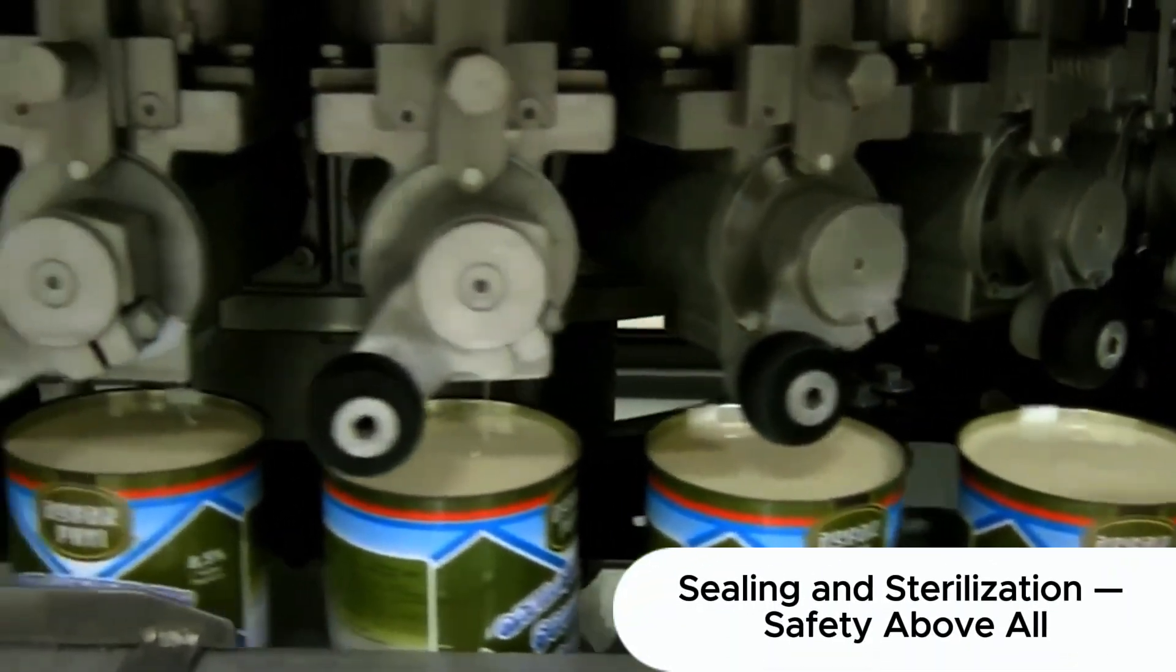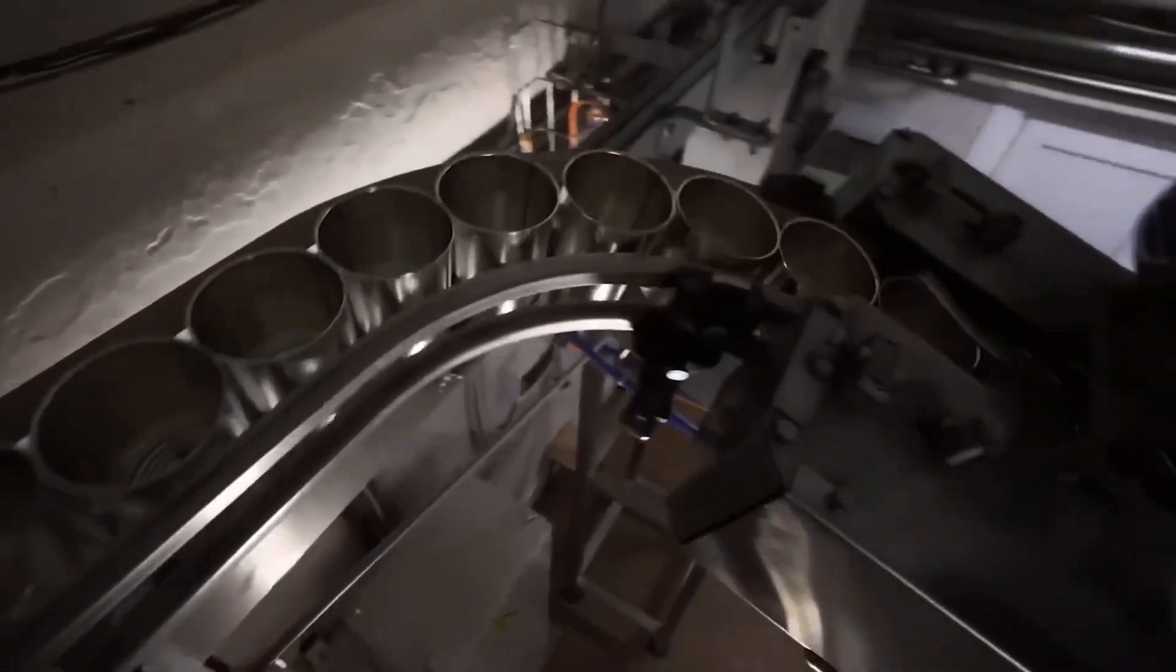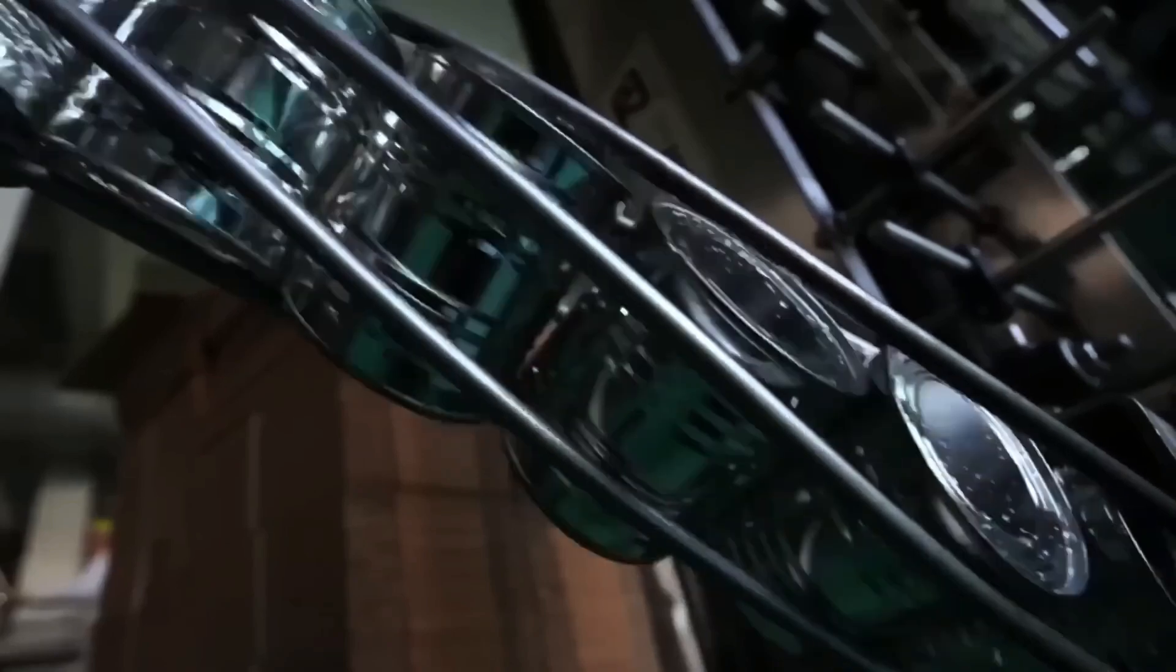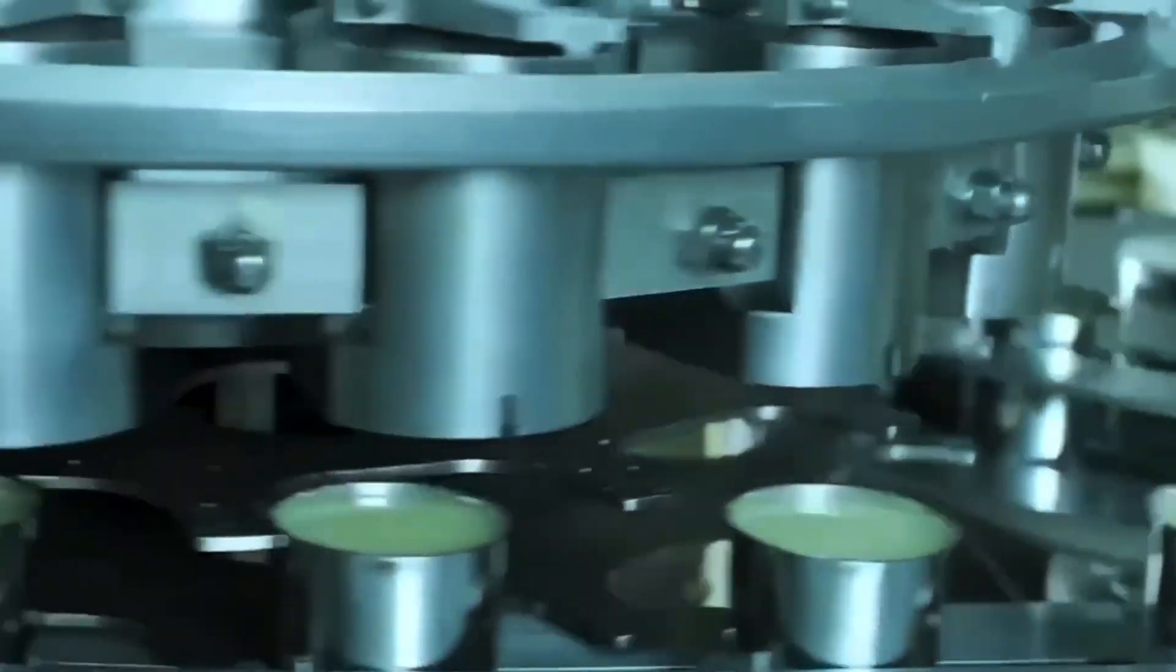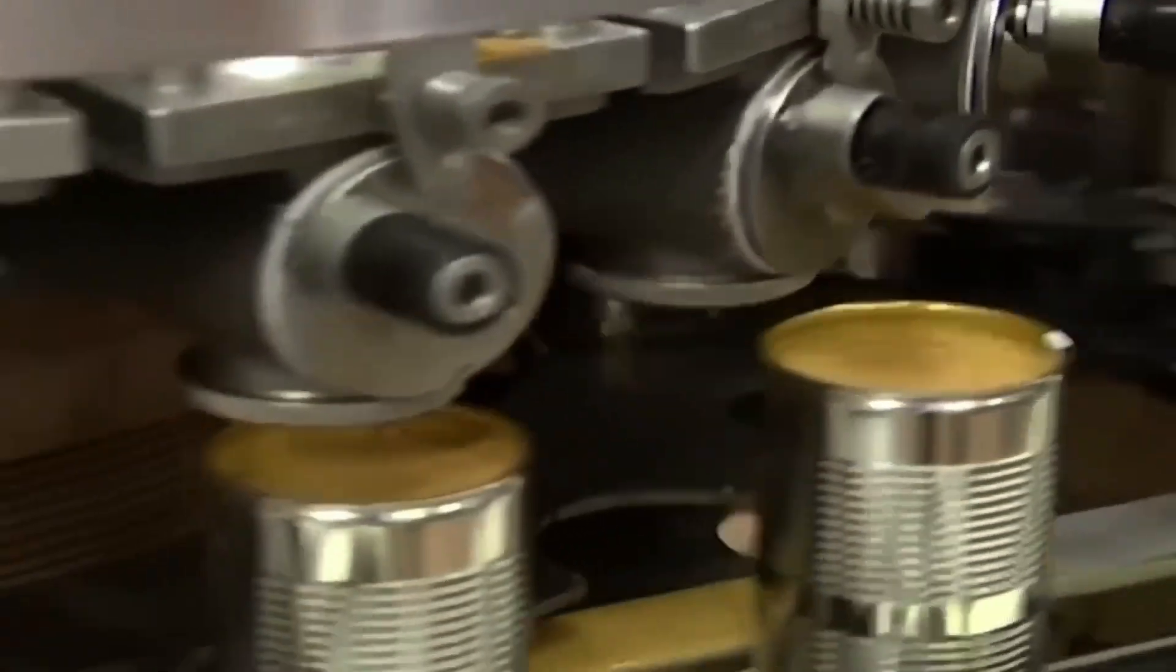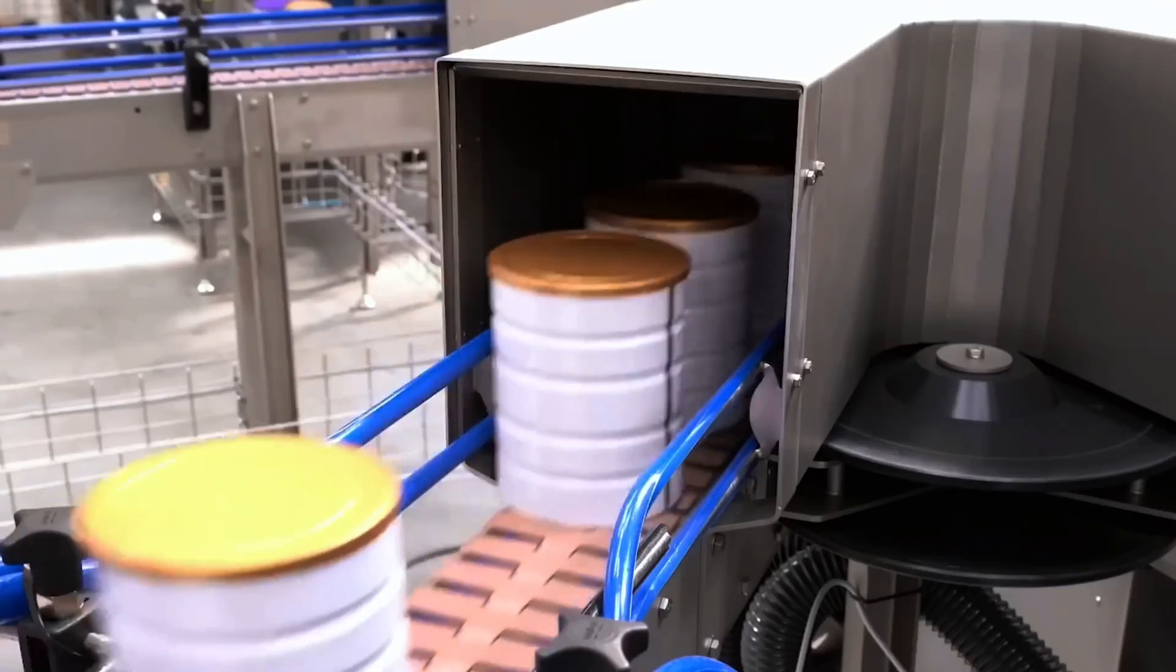Once filled, the cans are sealed. A metal lid is pressed onto the can's rim and secured using rollers that form a hermetic double seam. This seal must withstand internal pressure and preserve the product for many months. After sealing, the cans are sent into autoclaves, large steel chambers for sterilization. Inside, they're exposed to pressurized steam at temperatures between 120 to 125 degrees Celsius, for 10 to 30 minutes, depending on can size and product density. This is the final safety barrier, eliminating any remaining microorganisms. Sterilization gives condensed milk a key advantage, a long shelf life without refrigeration, often up to 12 months. Taste, texture, and aroma remain unchanged thanks to this precise process.